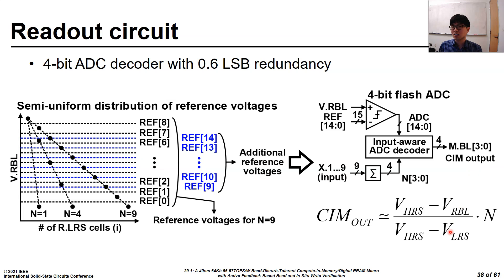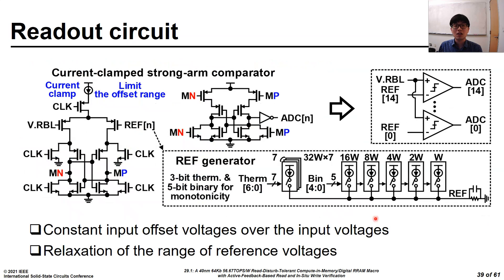In summary, the reader voltage represents the compositions of accessed RRAM cells, and the ADC determines the CIM output concerning the number of accessed RRAM cells. This slide shows the schematics of the ADC comparator. The strong arm latch is used to achieve high sensitivity in the ADC. The current clamp is employed to mitigate the variation of the input offset of the reader voltages, thereby relaxing the range of reference voltages. The reference generator consists of 3-bit thermometer and 5-bit binary codes to achieve monotonicity of the reference voltages.